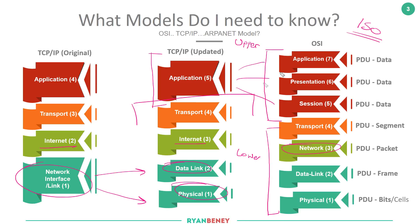For your ICND1 and CSENT certifications, the two models you need to be fully aware of are the updated version of the TCP/IP model and the Open System Interconnect model. You will need to memorize and understand the differences between them as part of your exam.